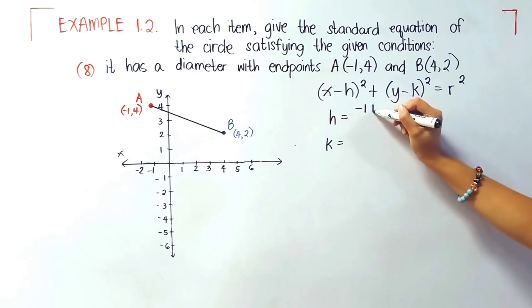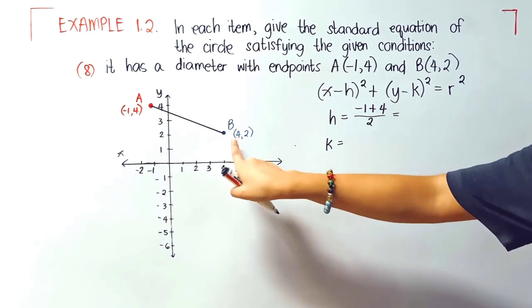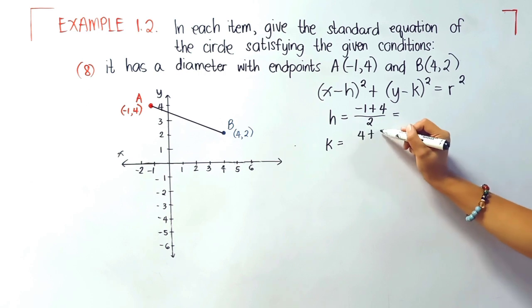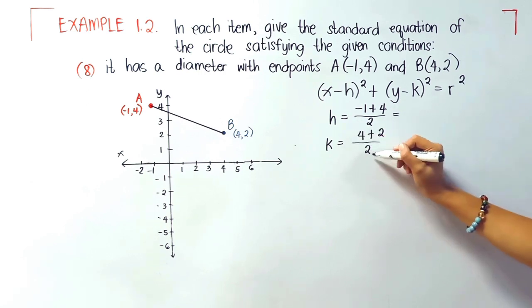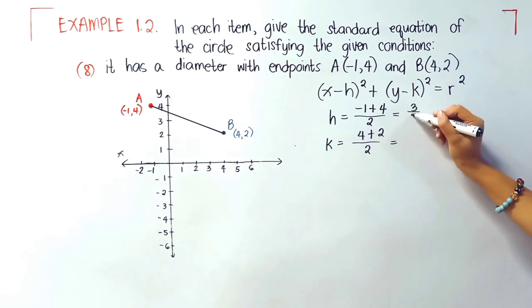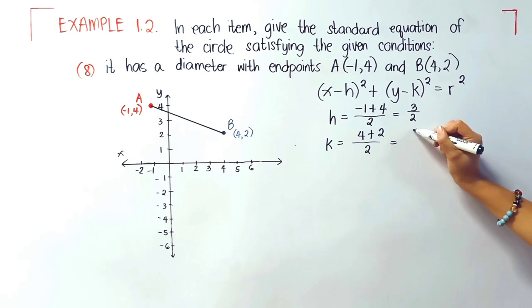It's the average. Let's have now the y: (4 + 2) divided by 2. That is 3 divided by 2, and then 6 divided by 2, which is equal to 3.